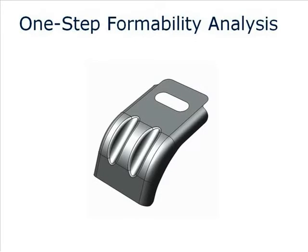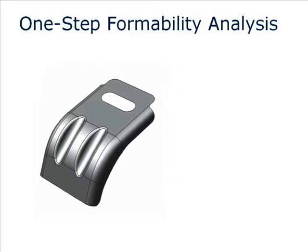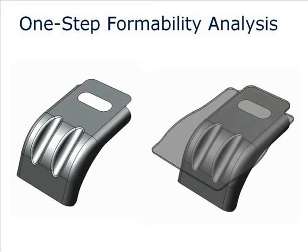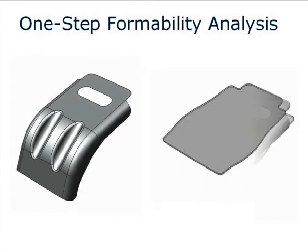Die designers need to quickly and accurately generate flattened and intermediate preforms for complex sheet metal parts. The flattened and preformed shapes are required to design the strip layout and the dies. If the unformed shape is not accurate, multiple physical tryouts can be required to correct the design, a process that is expensive and time-consuming.